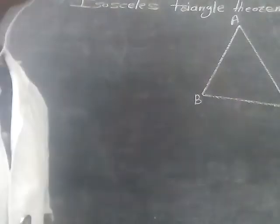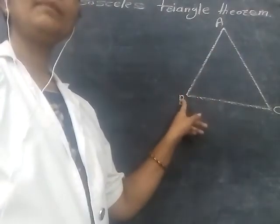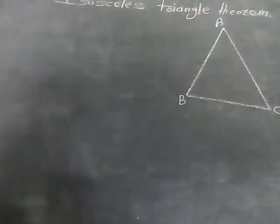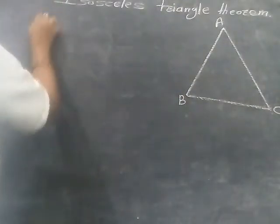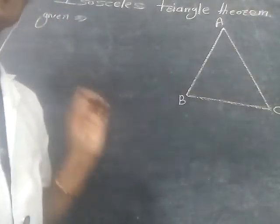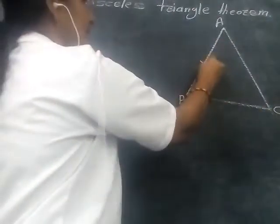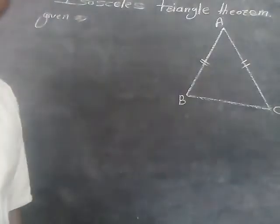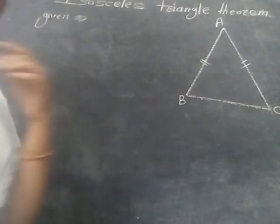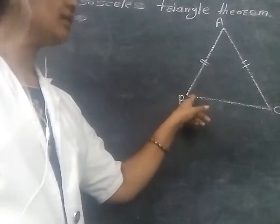Here let us consider triangle ABC. ABC is any triangle. What does the theorem say? The given is that ABC is any isosceles triangle, meaning AB is congruent to AC. In this theorem it is given, and we have to prove that the angles opposite to these congruent sides are congruent.